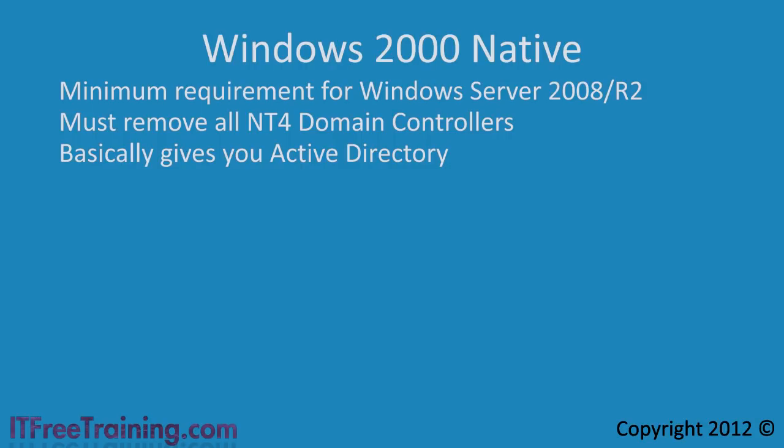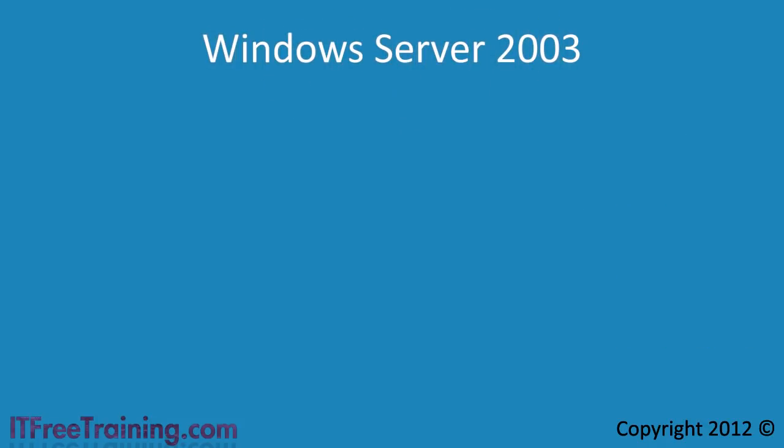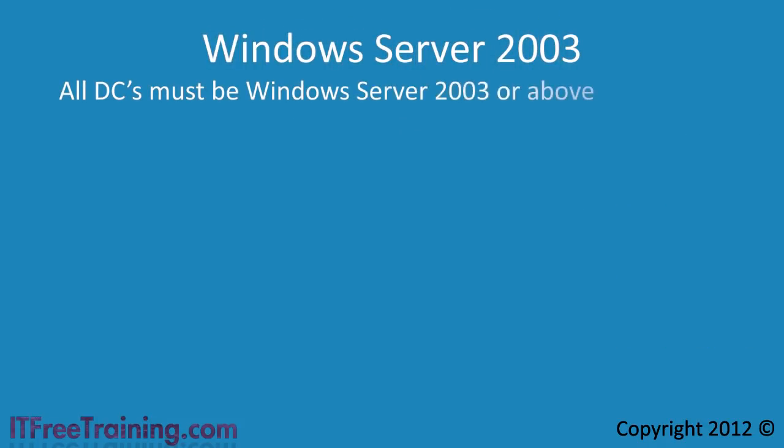The next domain functional level is Windows Server 2003. When your domain is at this level, all domain controllers in your domain must be Windows Server 2003 or above. If you attempt to add a lower level domain controller such as Windows Server 2000 later on, the operation will fail. With the Windows Server 2003 domain functional level, you do get some new features.